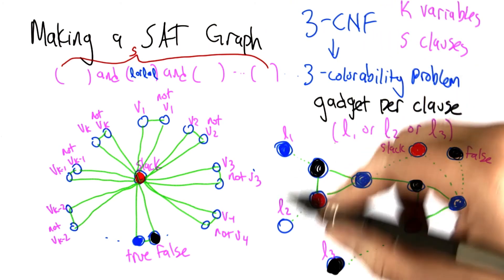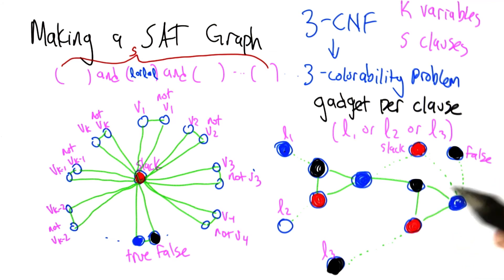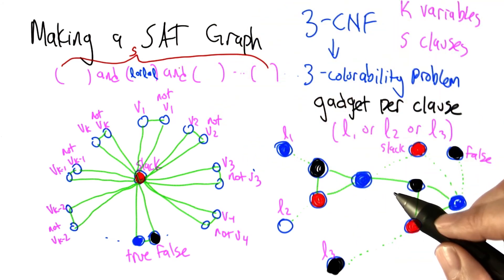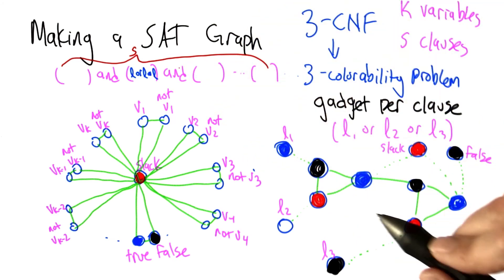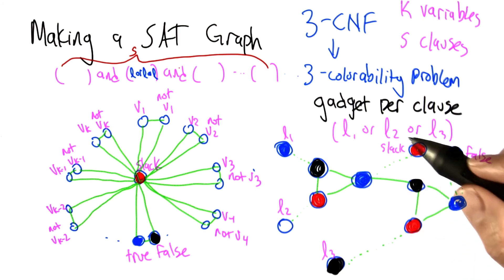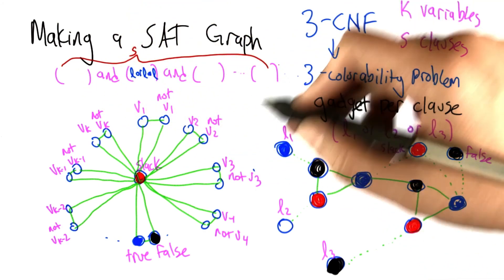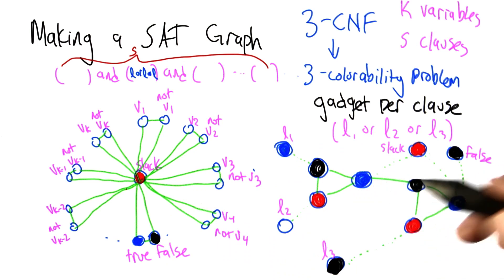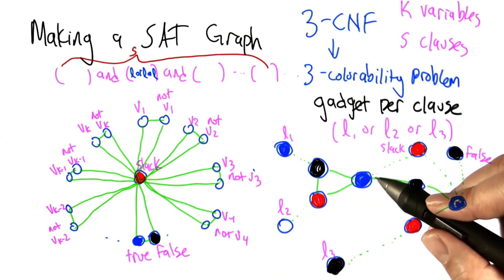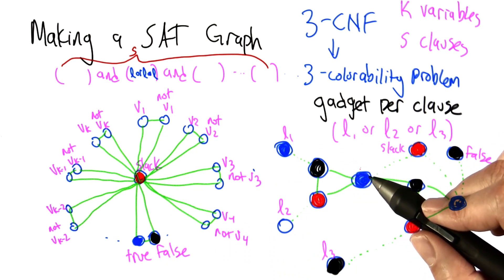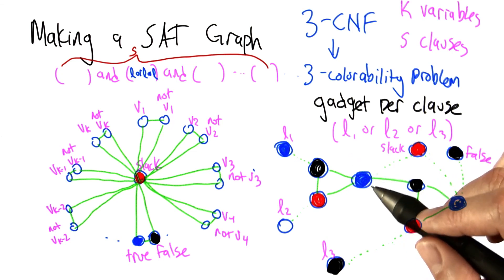So this graph that we've built is colorable if and only if the entire formula is satisfiable. That's kind of cool, right? So even though a formula with Boolean variables in it and a graph with different colors in it feel like very different problems, in a very deep fundamental mathematical way they're really the same problem.